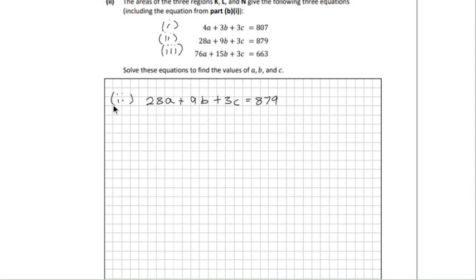I'm going to subtract this one, so I'll change the signs. We get -4a - 3b - 3c, which will give us our cancellation of c's. We get -807, and the first equation a and b will be 24a plus 6b, and that will be equal to 72. Let's take that as an equation we will use later, just mark it.